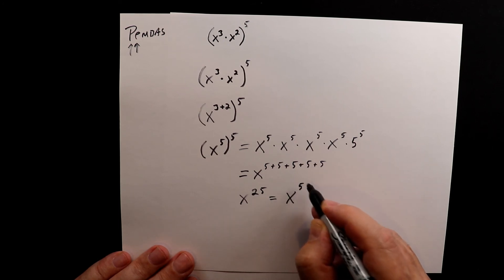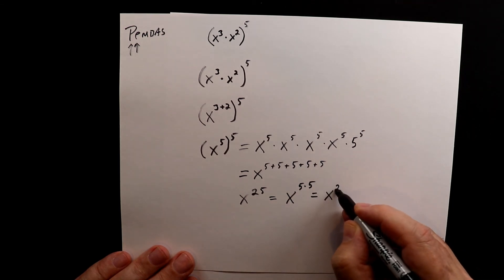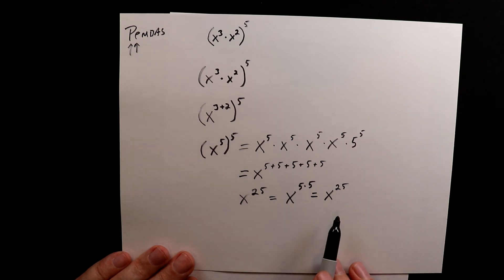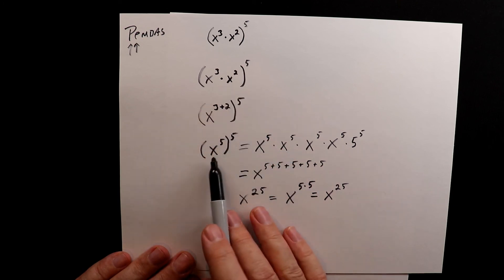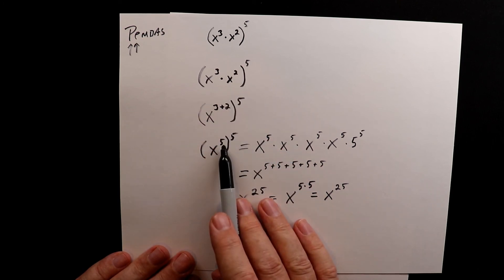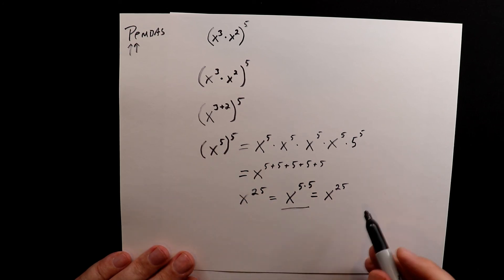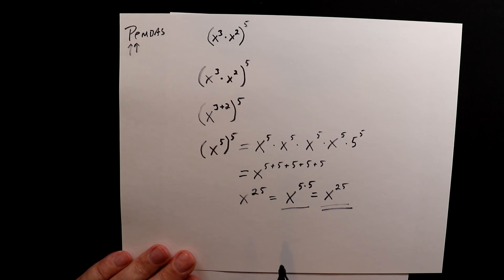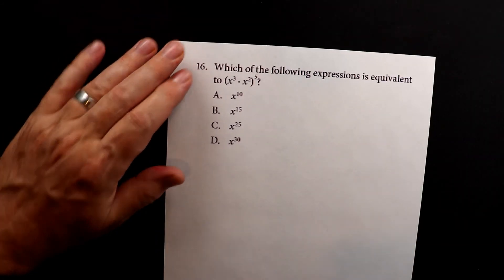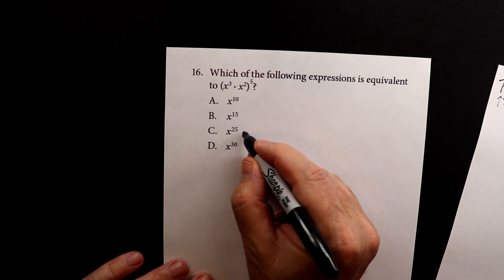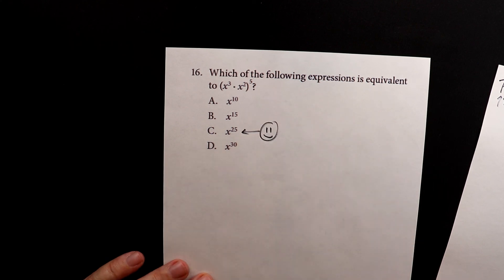So x to the fifth times five is x to the 25th. Once you combine the inner exponents with addition — because you're multiplying — you get x to the fifth. Then applying the power of a power rule brings you straight to x to the 25th, which is your final answer. We go to our choices and it is letter C.